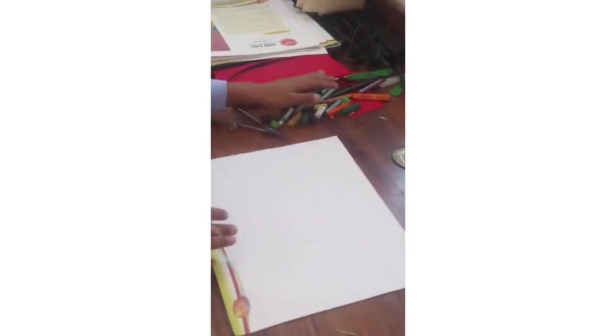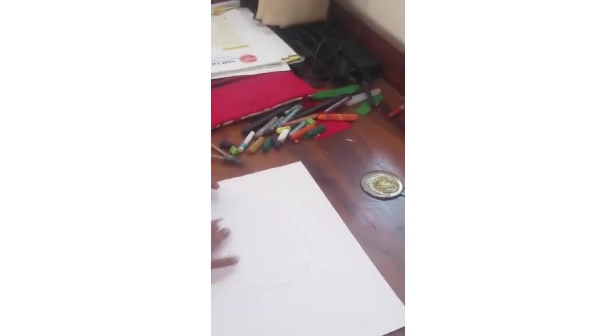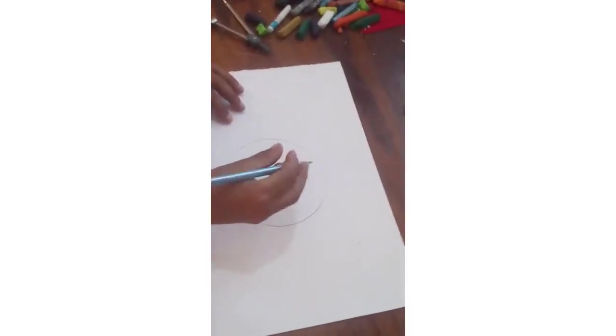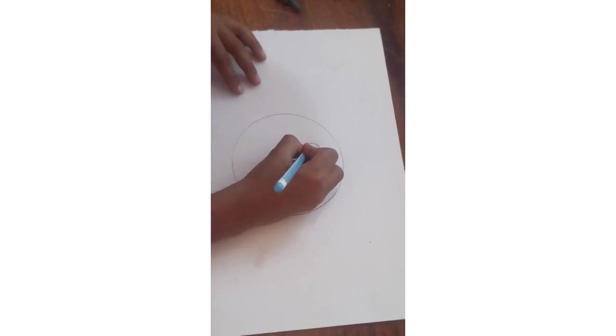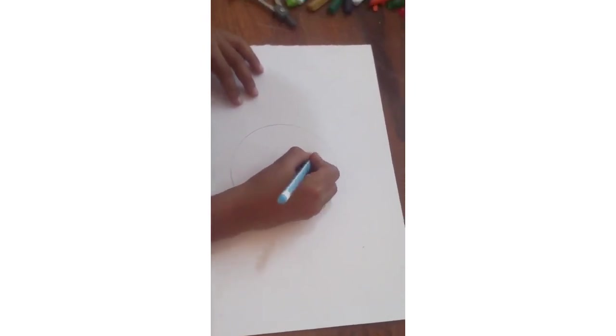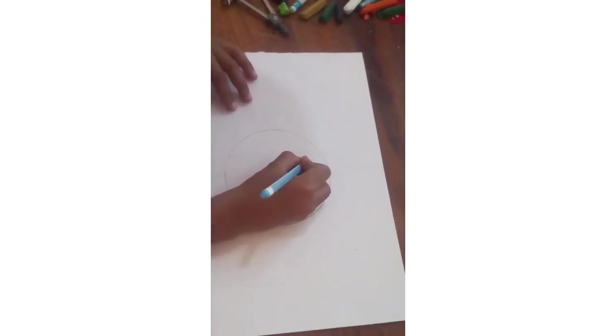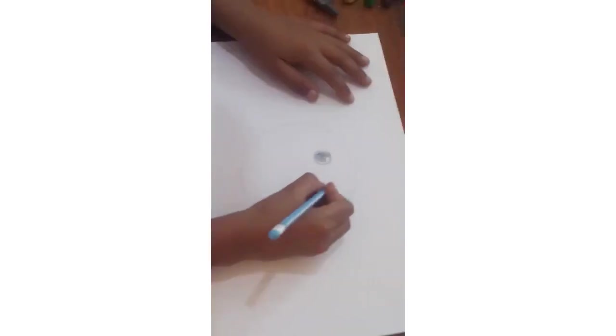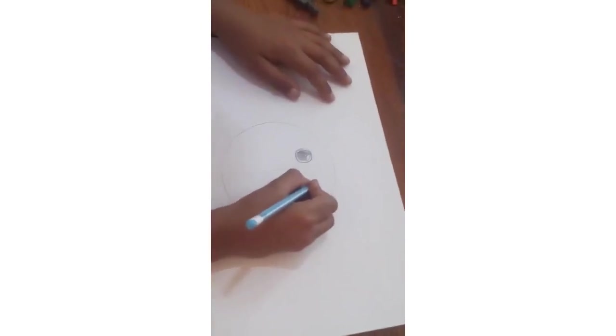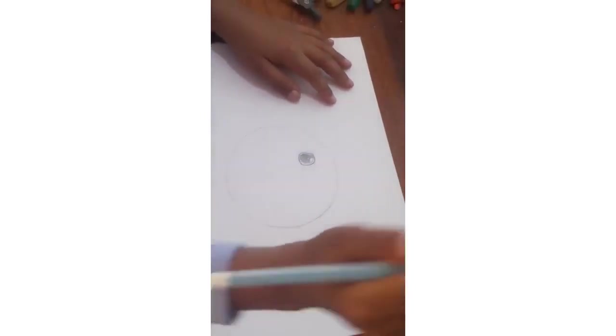Here is my sheet and here are my colors. Now I am going to draw a circle and an eye in that. And now I am going to draw the second eye.